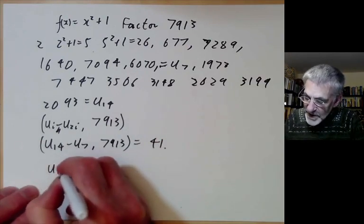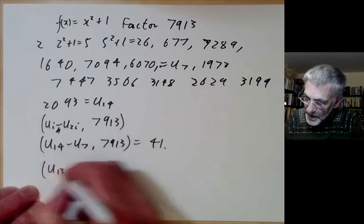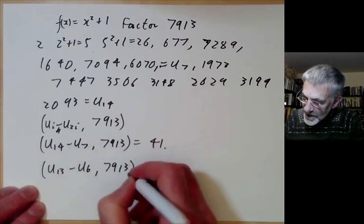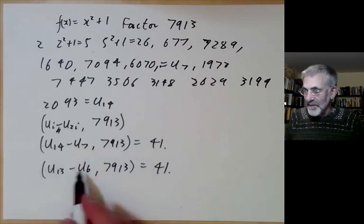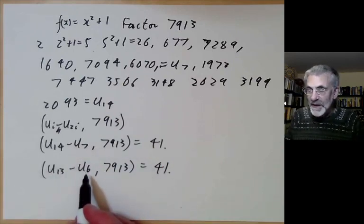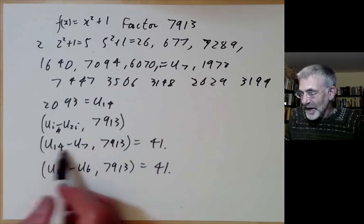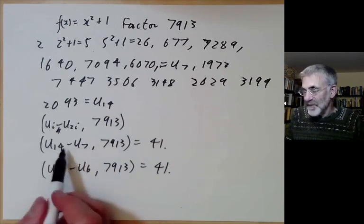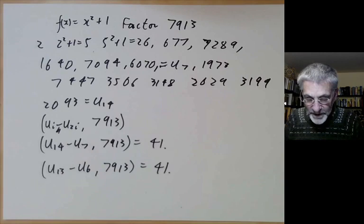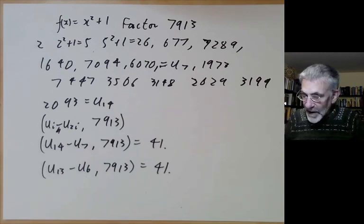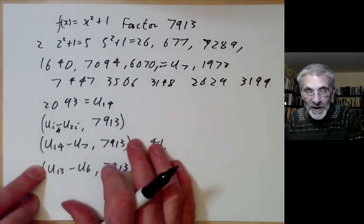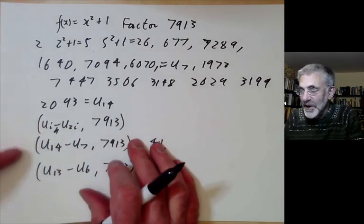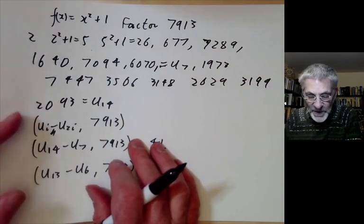Notice that u13 minus u6 with 7913 is also equal to 41. We never actually checked u13 minus u6 directly. We didn't need to because we eventually caught it when we got to u14 minus u7. That's Pollard's rho method. It gives a substantial increase over the obvious method of just checking all prime factors up to the square root of n.